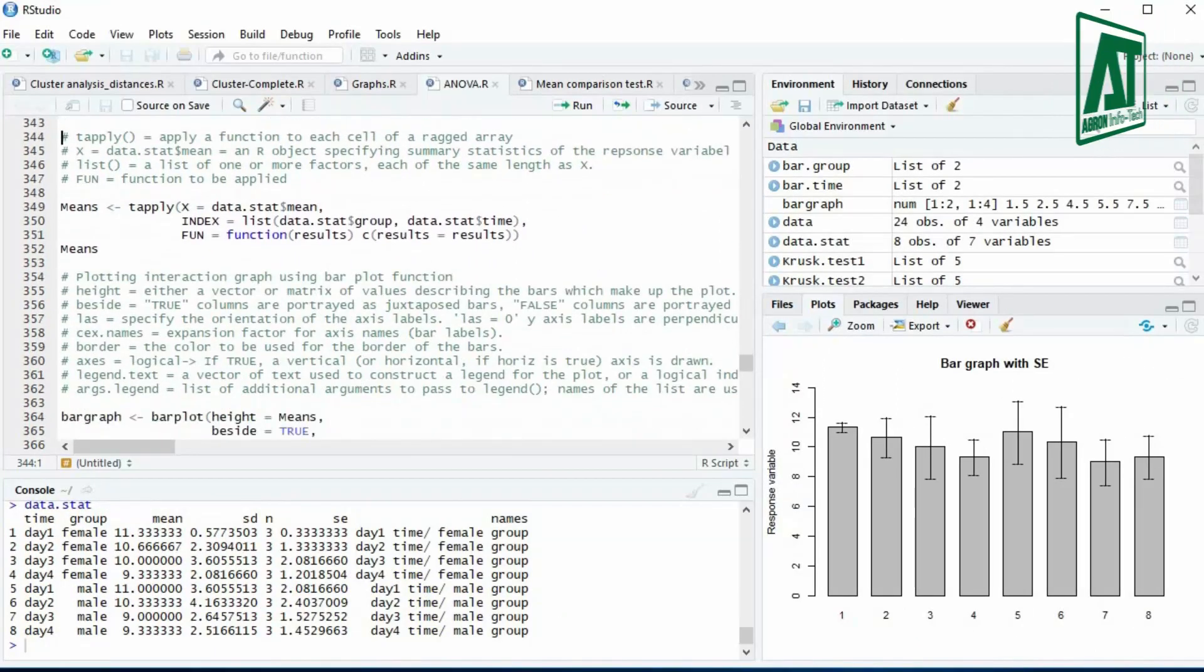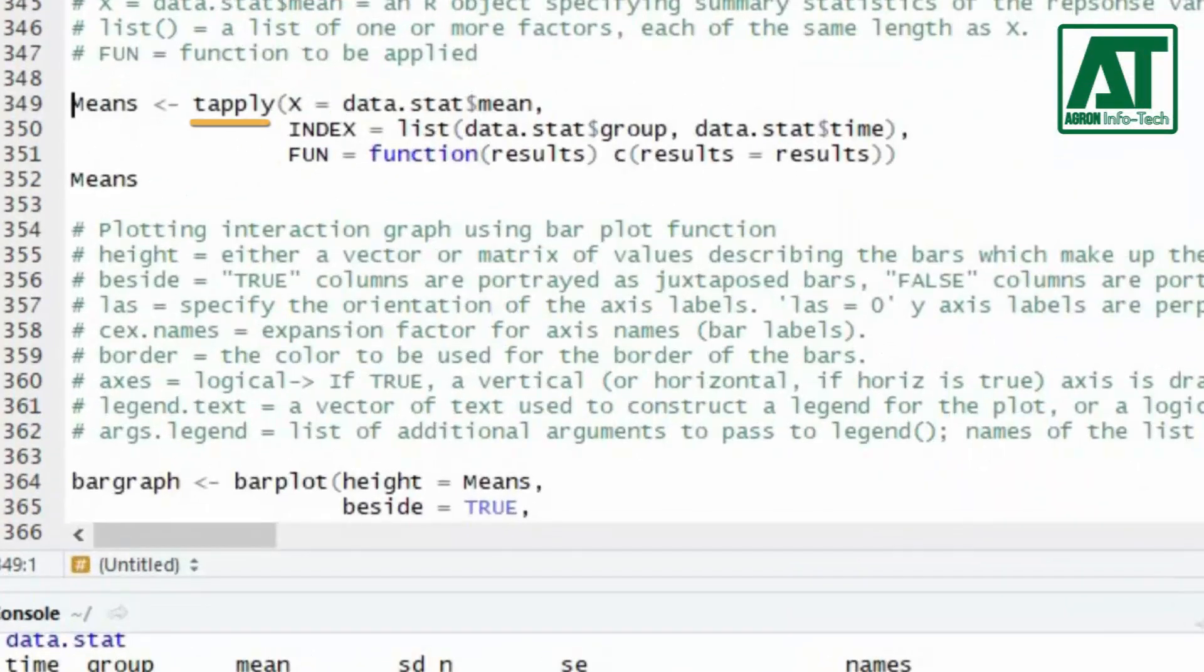To get the matrix of interaction means use tapply function. This function requires arguments. X argument is an object that specifies the mean values to be used from previous summary statistics. In index argument provide list of factors each of the same length as x. In fun argument provide function for the matrix of means.